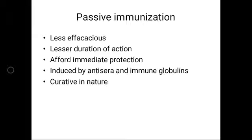So passive immunity is the next step to active immunity itself. It is less efficacious, and obviously it will take less duration for it to get executed. It will take less time to effectively enter the body and show its biological or therapeutic effect. It will afford immediate protection, since the antibodies are ready-made — produced in another person or animal who has been actively immunized — so the latent period seen in active immunization is reduced to zero.